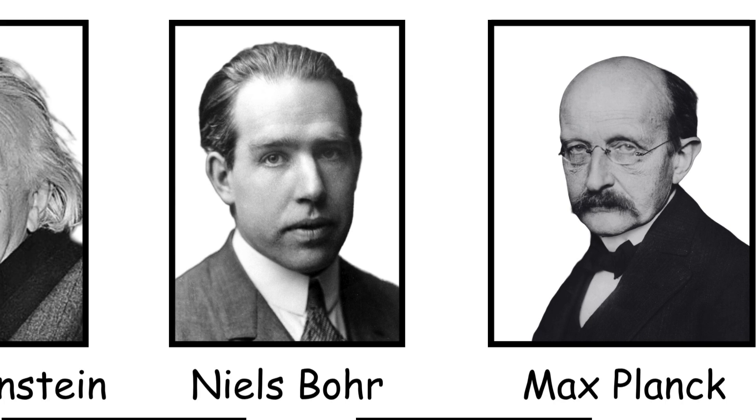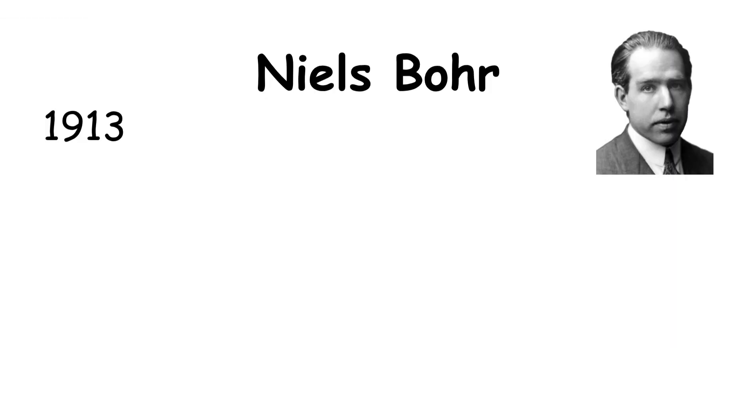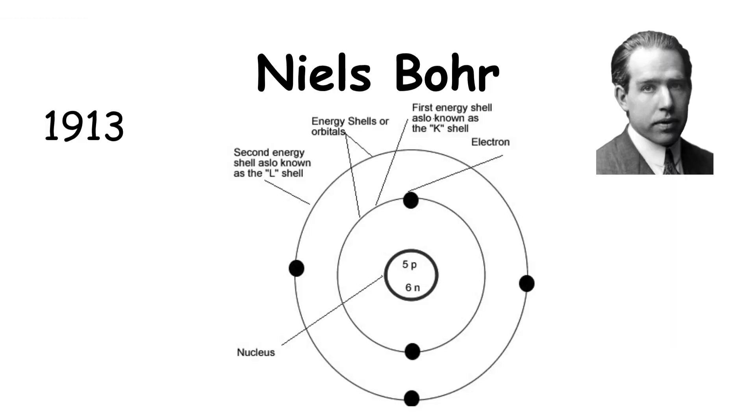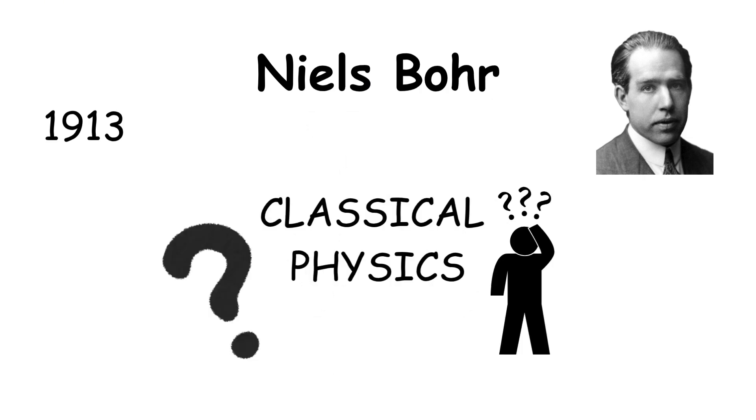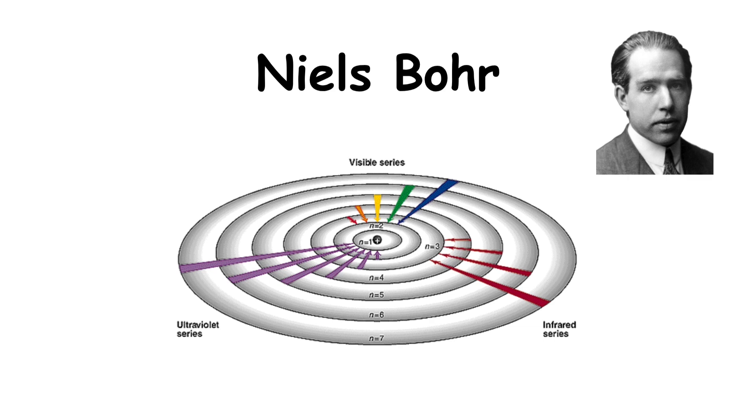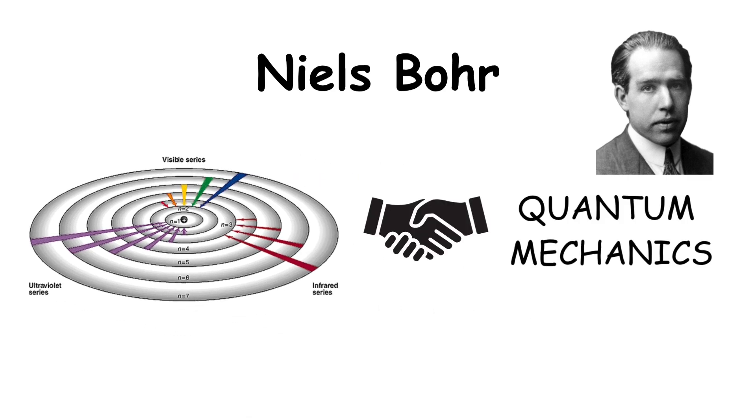Niels Bohr. In 1913, he proposed a model where electrons orbit the nucleus in fixed energy levels, something classical physics couldn't explain. His model explained why atoms emit light at specific colors and laid the groundwork for quantum mechanics.